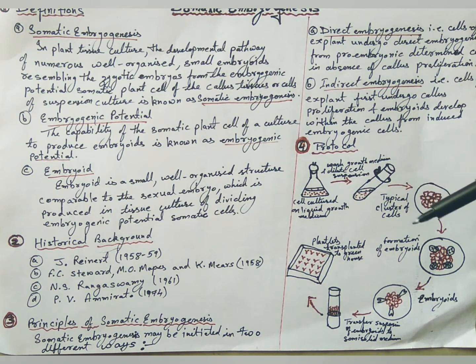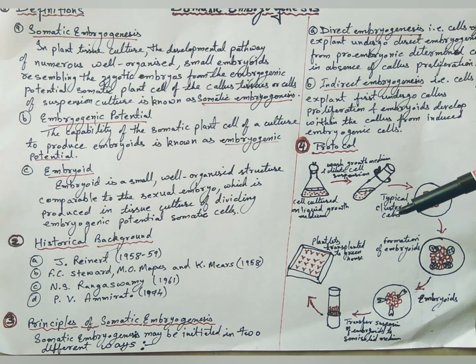Explants are placed individually on a semi-solid Murashige and Skoog medium containing 0.1 mg per liter 2,4-D and 2 percent sucrose. Cultures are incubated in the dark.